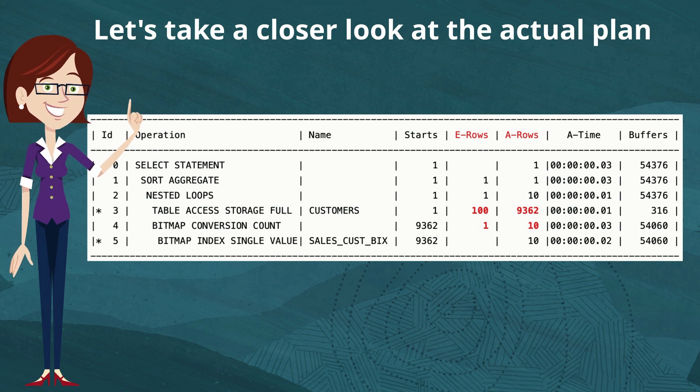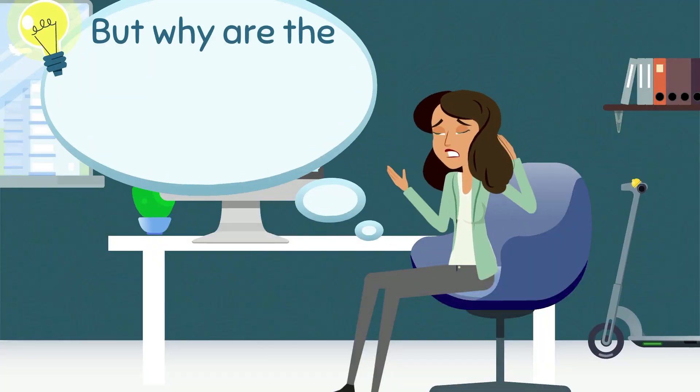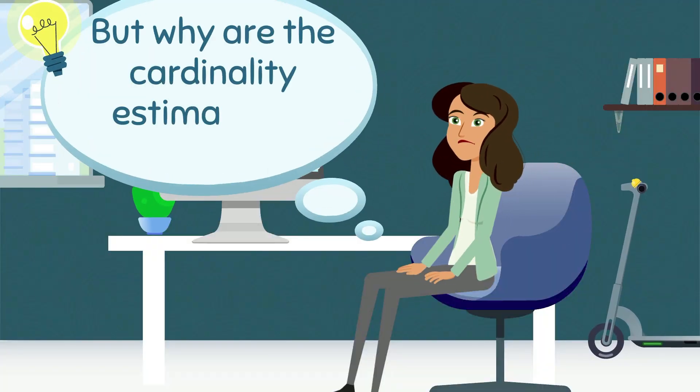Estimated number of rows, actual number of rows. And you'll notice there, there's quite a big discrepancy. And you might be wondering, why are the cardinality estimates so wrong in this case?